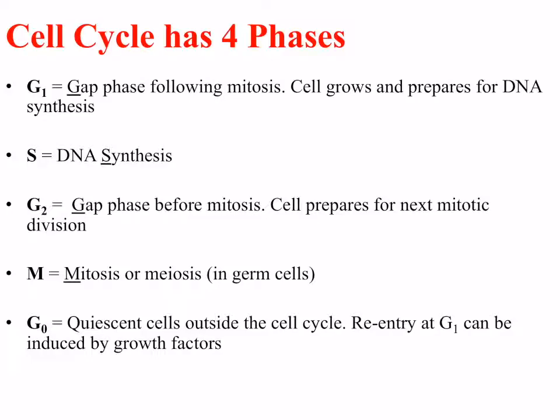The G0 phase is where quiescent cells exist outside of the cell cycle — they don't actively divide — but in order to divide, they need to re-enter at G1. This can be induced by certain chemicals, in particular growth factors.